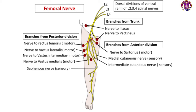The posterior division of the femoral nerve gives one cutaneous branch and also gives a muscular branch to supply the quadriceps muscles. The other branch of the posterior division becomes the saphenous nerve. It runs down the medial side of the leg together with the saphenous vein and terminates in the ball of the big toe.